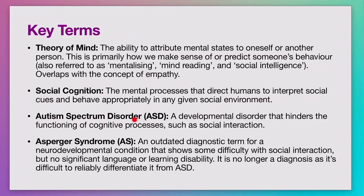Autism spectrum disorder is a developmental disorder. Key characteristics include deficits in social cognition, so you can visibly spot someone who has autism by paying close attention to their social interaction. Some people who have autism spectrum disorder have learned how to be in social situations and have been exposed to nurturing and support that helps them be more functional socially — you may not be able to spot their challenges in communication. But for other people who have not had access to that kind of support, you can tell that there is a presence of autism spectrum disorder.